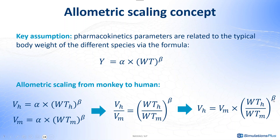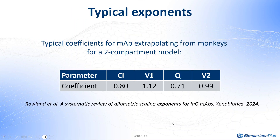The value of beta can either be estimated if I have several preclinical species or fixed. In my example, as I have only monkey data, I will use fixed beta exponents. The values I will use are the following and they are taken from this recent publication.